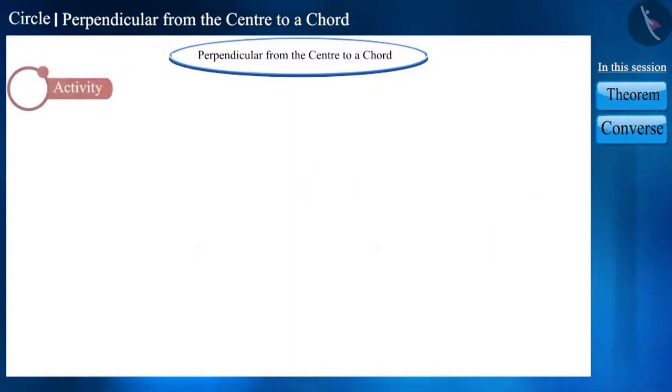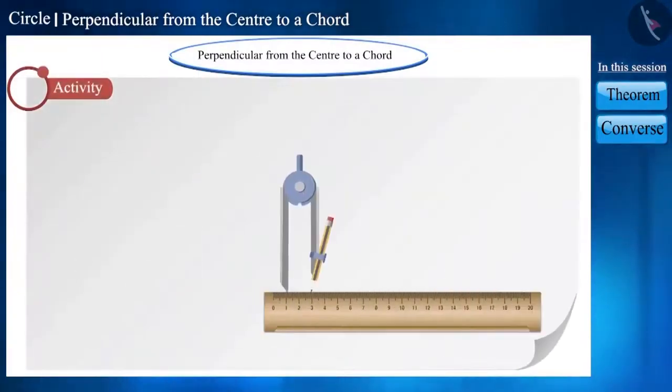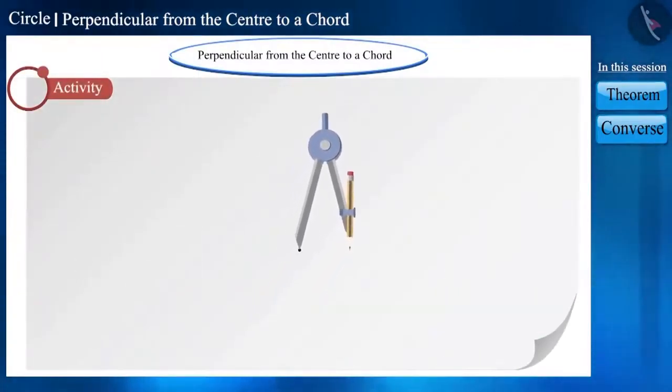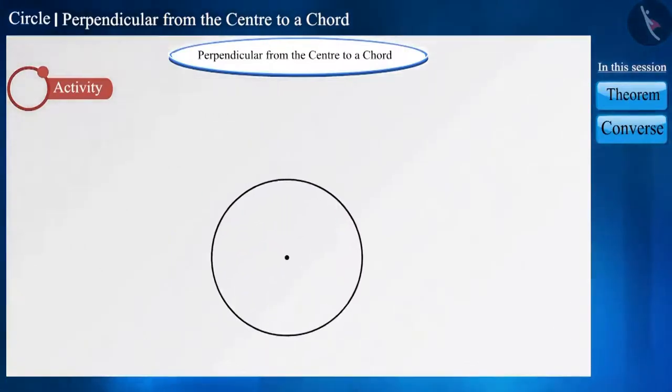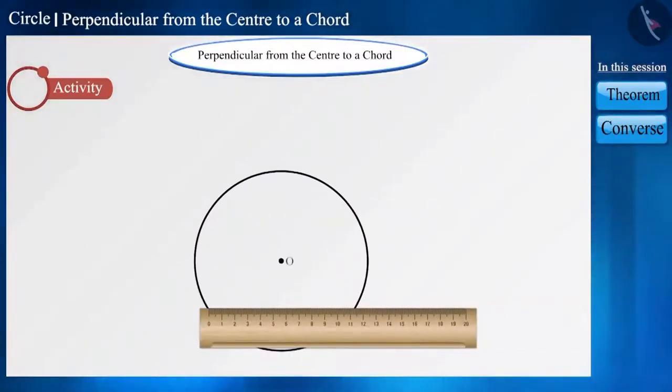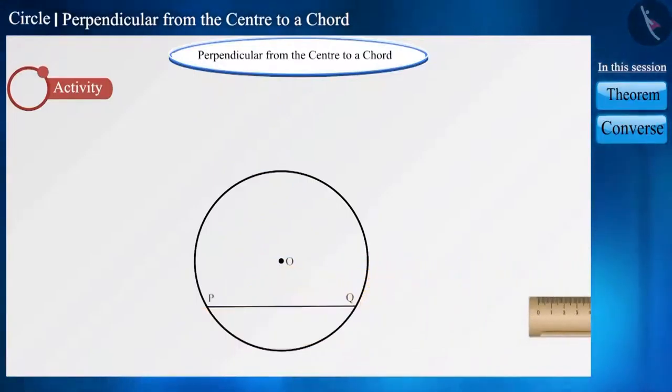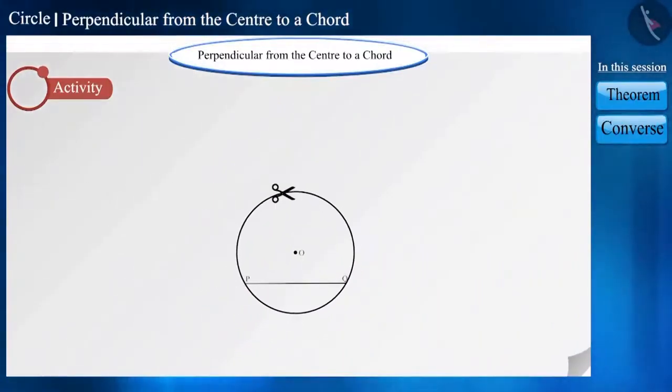Let's start with an activity. Draw a circle with radius 4 cm and O as its center, and draw a chord PQ in it. Friends, with the help of scissors, cut the circle.